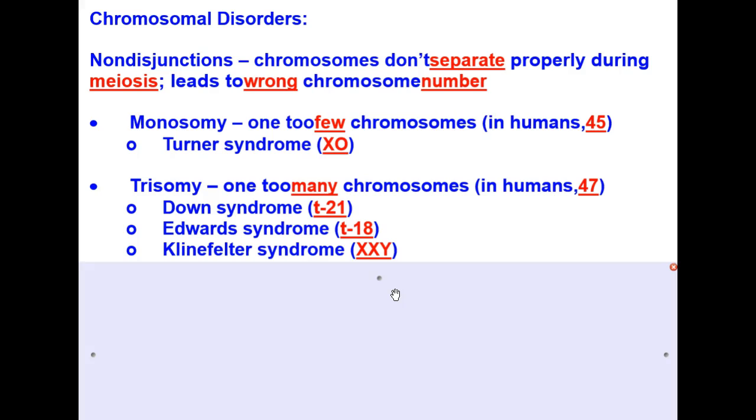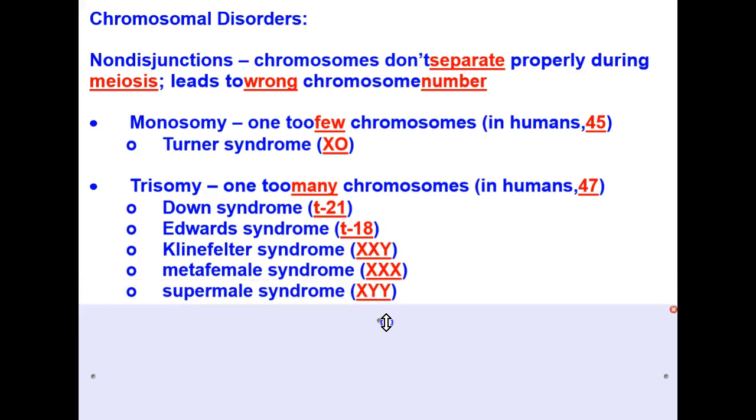Klinefelter syndrome, so you would be XXY, or having a Y chromosome added on to a female XXY. Metafemale would be one too many X chromosomes given to a female, so XXX. And then there would be supermale syndrome, which ends up with an extra Y chromosome, so it would be XY.